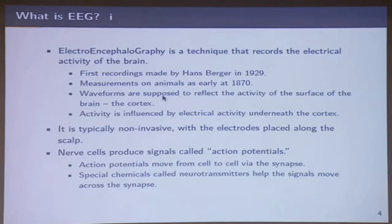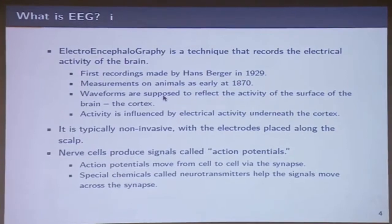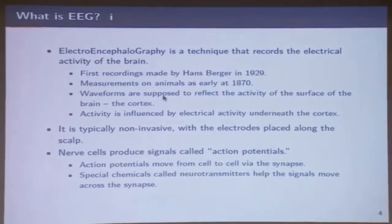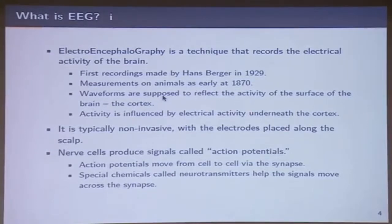First recordings were made as early as 1999 on humans and on animals as early as 1870. These waveforms reflect the activity on the surface of the brain — the cortex — as well as activities influenced by electrical activity underneath the cortex. All of you have heard that neurons fire, but what we are looking at is not single neuronal firings; here we are talking about populations of neurons. The most important point is it's non-invasive.